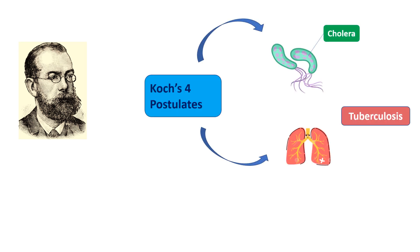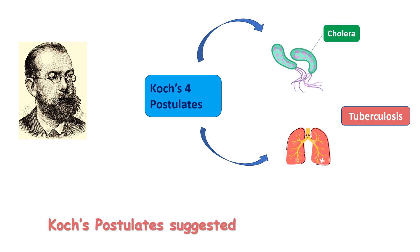Koch first applied these postulates to explain cholera and tuberculosis, and they were later generalized to other bacterial diseases. A postulate is a statement that is believed or accepted to be true, or a statement that forms the basis of a theory. Here, Koch gave four statements that suggested a theory of disease.